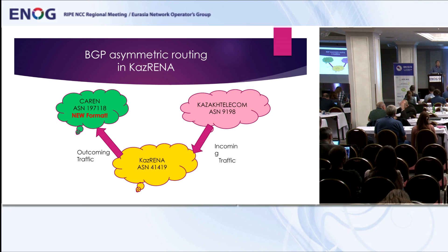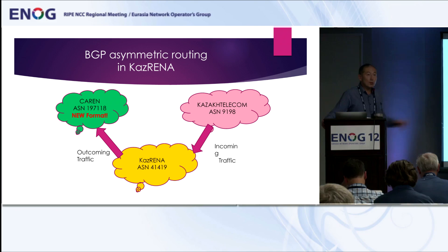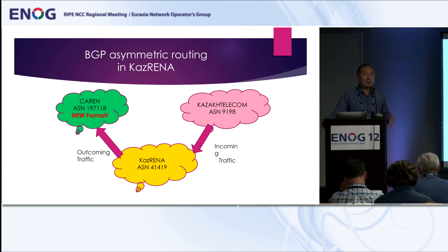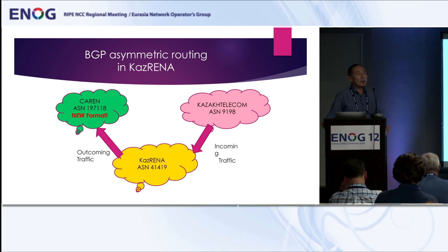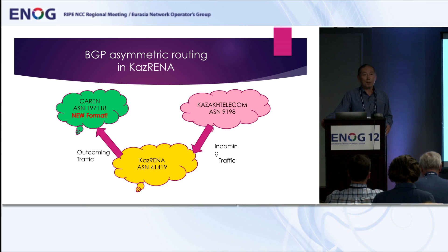Our clients complained about the service because there was overloading of the channel. We started asking: what is the problem? In the beginning, everything was unclear what had happened. But through standard investigation, we saw that the path through Karan with the new 32-bit AS format was not being selected. Traffic preferred the line through Kazak Telecom. We started doing standard actions — adjusting AS path length — but it didn't help. Even 10 or 20 extra AS prepends had no effect.